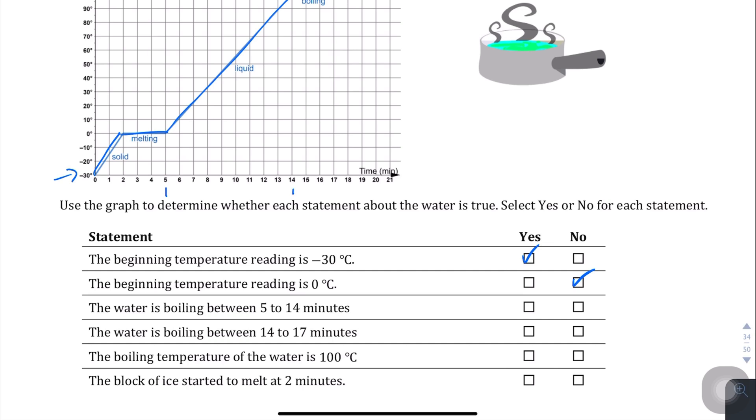The water is boiling between five and 14 minutes. Five is right here and 14 is right here. In this case it's the liquid part of it, so I'm going to say no. The water is boiling between 14 and 17 minutes. Here's 14, here's 17, and yeah that's the boiling part, so I'm going to say yes. The boiling temperature of water is 100 degrees Celsius, and sure enough that's 100 degrees right there. Yes. The block of ice started to melt at two minutes. Sure enough, yep, two minutes it starts melting. It's solid until that point, so I'm going to say yes to that last statement.